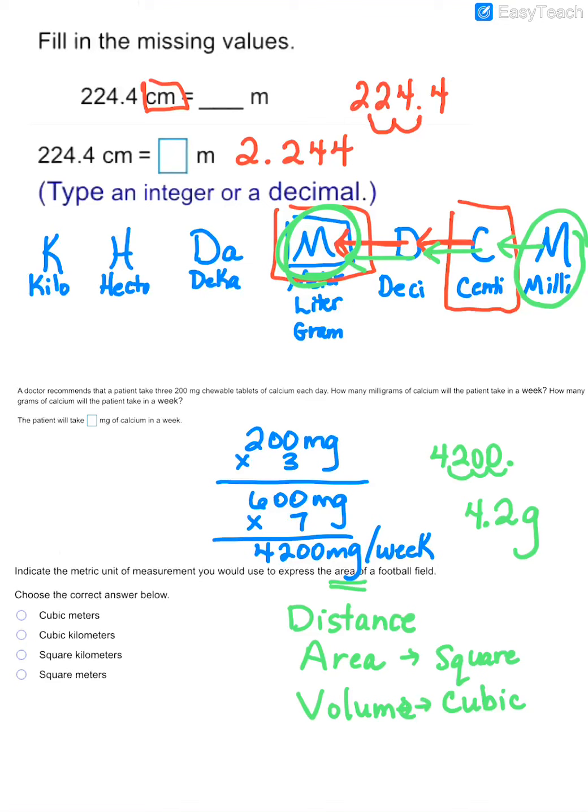So in this case, we're measuring area. So that comes down to the fact that we have to have square units. And then we have to decide, does it make more sense to say square kilometers or square meters?